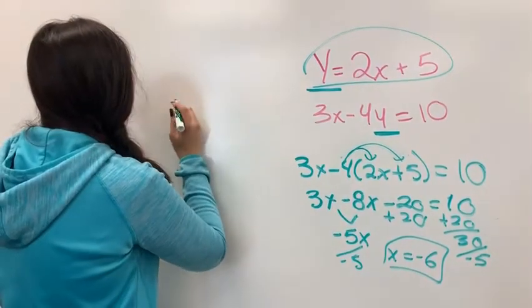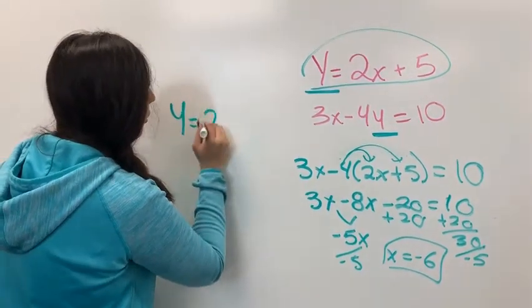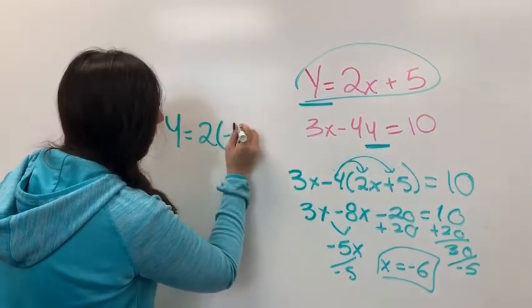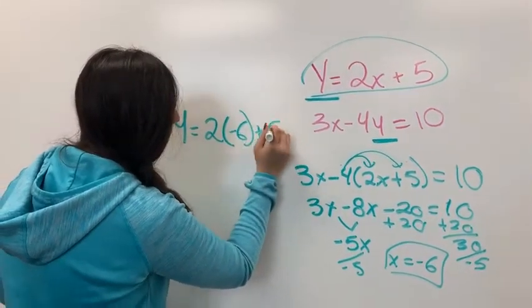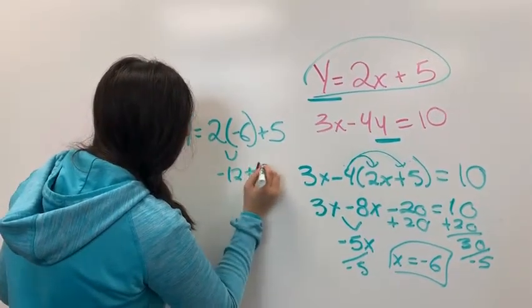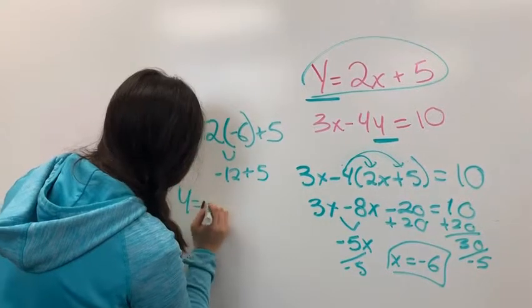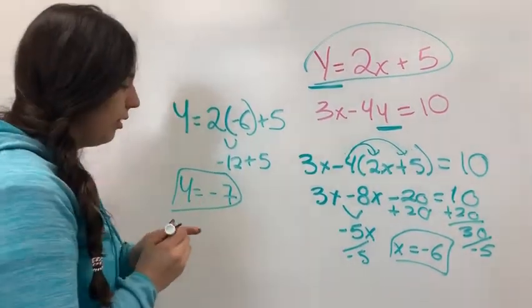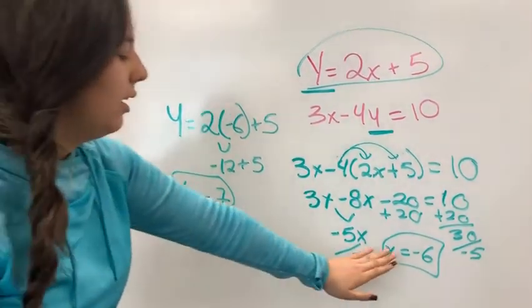And so then you have, you already have the value for x. So you can do negative 6 plus 5. And this is negative 12. And y equals negative 7. So now you have the values for y and x.